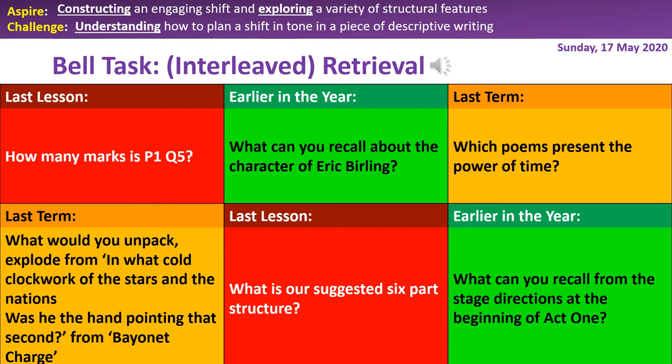The next poem is 'Exposure.' There is the repetition of the line at the end of each stanza: 'But nothing happens, but nothing happens, but nothing happens.' These soldiers are stuck in time in a horrific battle — not necessarily with enemy soldiers but with Mother Nature — and the only way they will escape this continuous suffering is actually by dying.